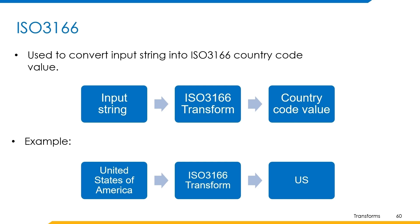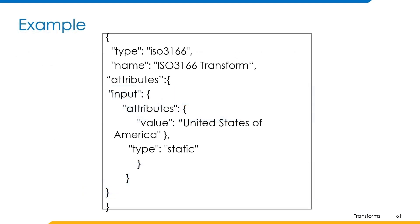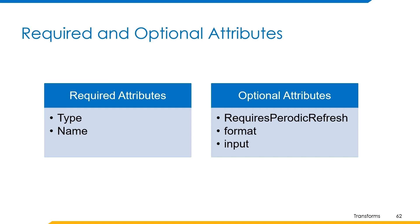Now let's understand how to build a transform using this operation. The example can be built in this format where the name of the transform is ISO 3166 transform and type is ISO 3166. The format of the output can also be specified using the format attribute, which is optional. If we do not specify the format attribute, then alpha 2 is considered by default. Input is provided in the input attribute and the generated output is the country code for the given input. The required attributes are type and name. The optional attributes are requires periodic refresh, format, and input. The valid values for format are alpha 2, alpha 3, and numeric.